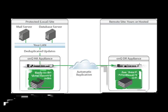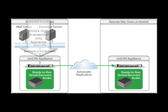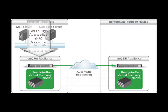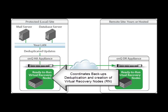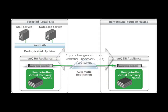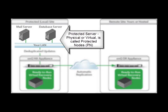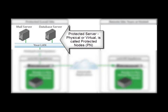First, let's review terminology. The OnCue High Availability, or HA, appliance is typically installed on the same network as your critical servers. It coordinates backups, deduplication, and creation of virtual recovery nodes, also called RNs. It also synchronizes changes with the OnCue Disaster Recovery, or DR, appliance. The server you are protecting, whether physical or virtual, is called the Protected Node, or PN.